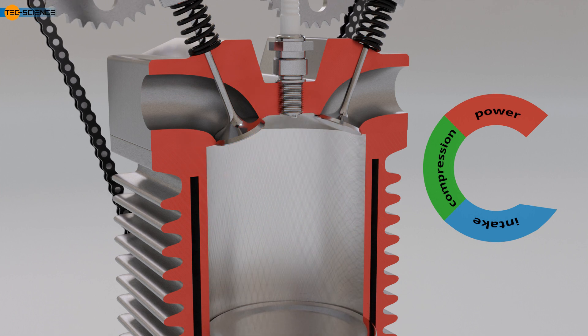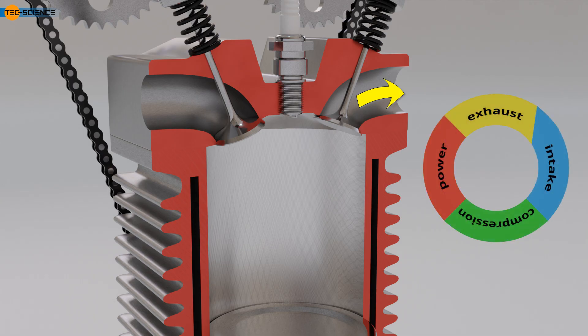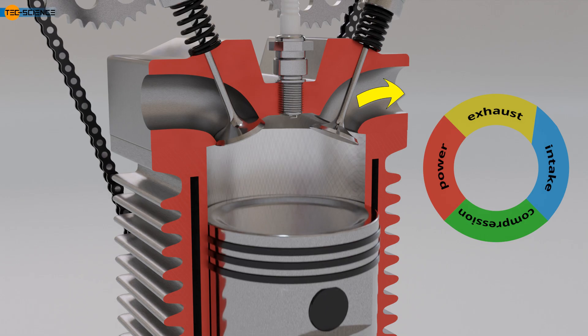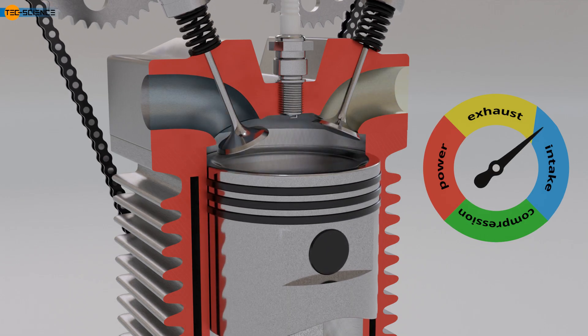Just before reaching the bottom dead center, the exhaust valve begins to open, starting the fourth stroke, known as the exhaust stroke. Due to the premature opening of the exhaust valve, the exhaust port is fully open once the bottom dead center is passed. The burned gases can now be expelled with relatively low force by the upward movement of the piston. When the piston reaches the top dead center, the exhaust valve closes, and the cycle begins again.